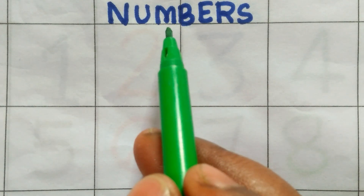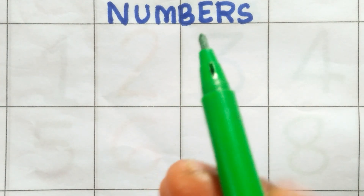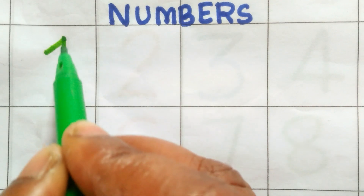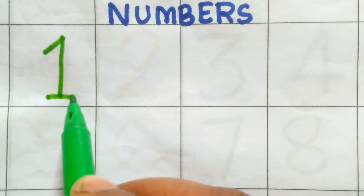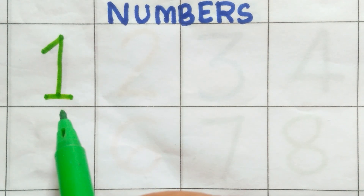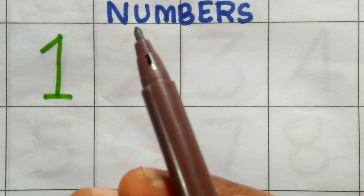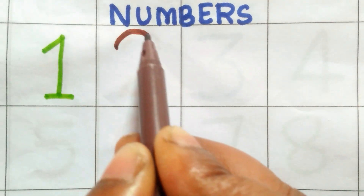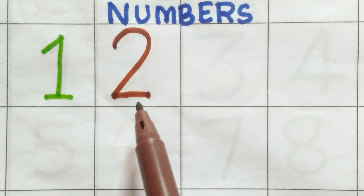Numbers. Green color. One. Brown color. Two.